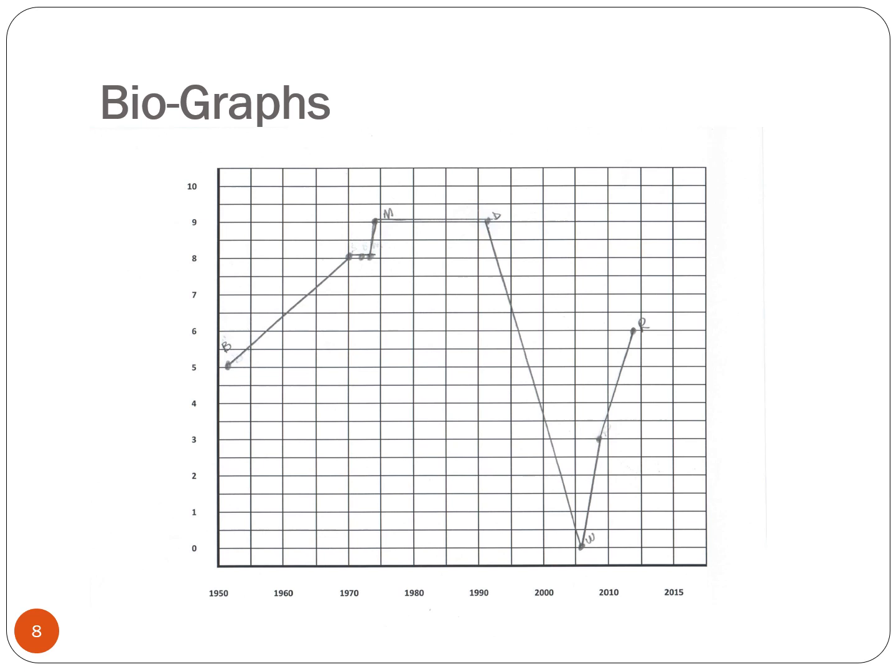For instance, my wife passed away in 2006, and as you might imagine, that event got the lowest score on my graph. However, I learned from that event and deal with my own health issues differently than I might if I hadn't had that experience. Significant events can cause profound changes in our lives. You will not turn your biograph in to me, so you can put any personal information you want on it without risking other people seeing it — this is only for your learning.